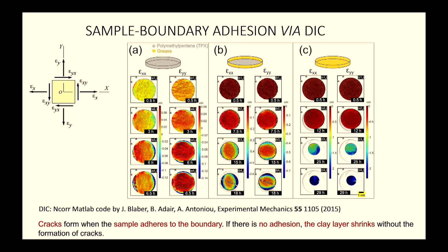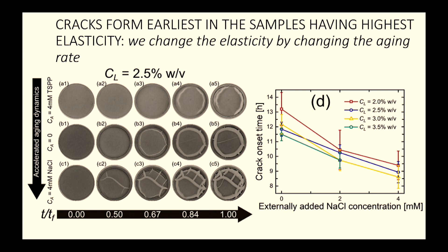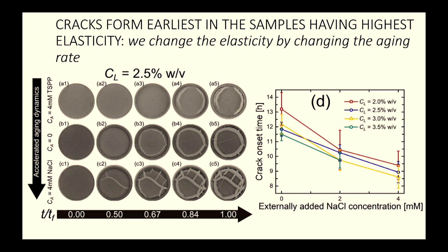Temporal snapshots across the three sample types (TSPP — very liquid; no additive — weak viscoelastic solid; salt — highly elastic from the start) show that as elasticity increases, cracking is more extensive, happens faster, and produces more cracks. The crack onset time is defined as the time at which the substrate is first exposed.